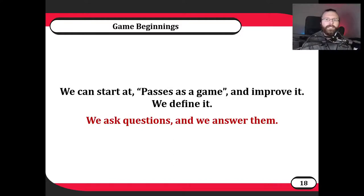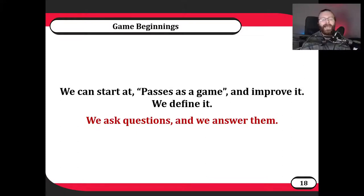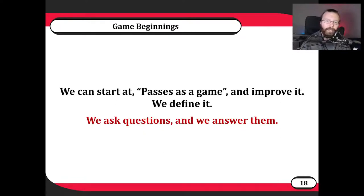So how do we do it? We start with something that passes as a game. We figure out what makes a game a game and then we make something that passes as it. Then we improve it, define it, and cement it as what it is. We go through that process — we ask questions and answer them. We have to come up with concrete answers for any question that we come up with. That is our role as a game designer.